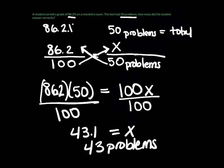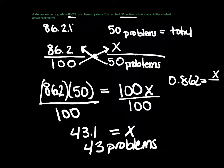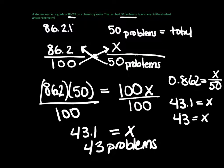There is another method you could use. That would be to take the left-hand side and divide by 100 to get a decimal. So 86.2 divided by 100 gives 0.862, which equals x over 50. Then multiplying both sides, 0.862 times 50 gives the same answer: 43.1 equals x. Rounding to the nearest whole number, 43 problems.